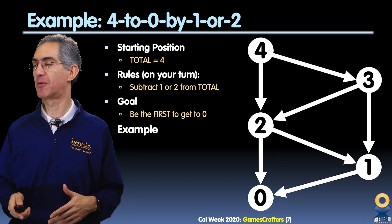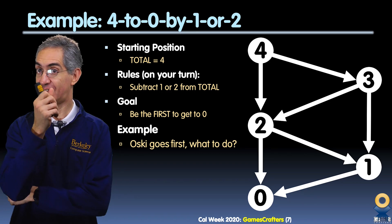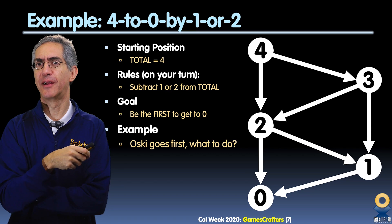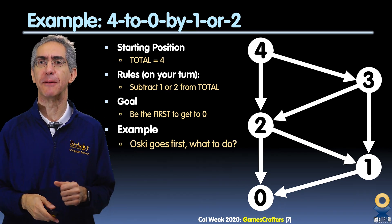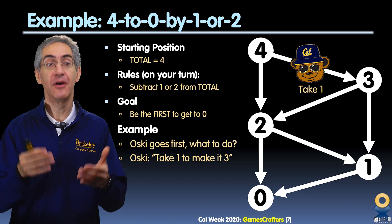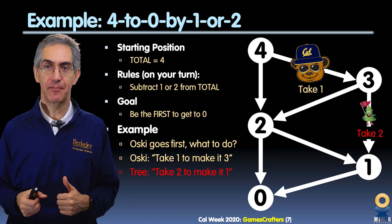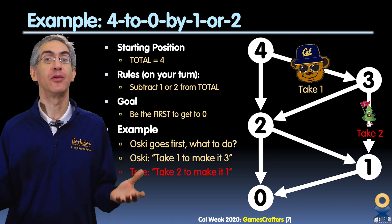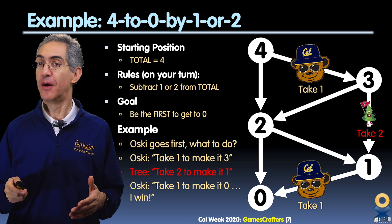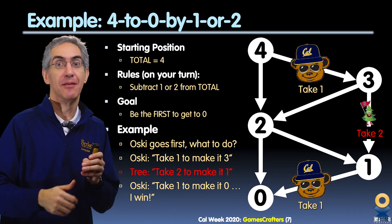Let's play an example game. Oski's going to go first with 4. Pause the video and play this with a friend to figure out the best move. Welcome back. Oski decides to take 1, making it 3. Now the tree takes 2 away, leaving Oski at 1. From 1, there's only one move you can make — to win — and Oski claims that victory. So the question is: did Oski play perfectly, or did both sides mess up?